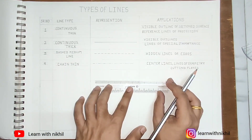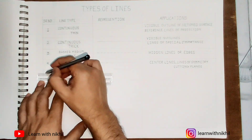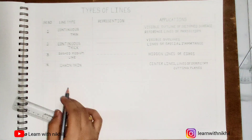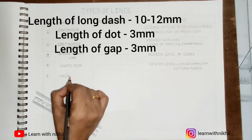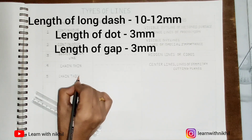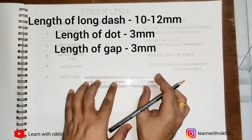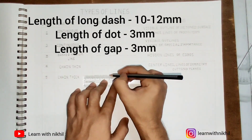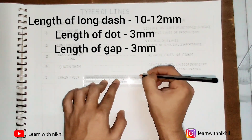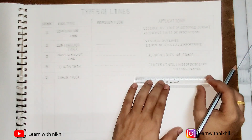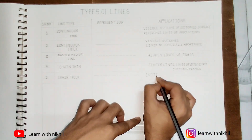The next one is the chain thick line. The distance matters a lot here as well — it is essentially the bigger version. The long dash is 10 to 12 millimeters, the gap is 3 millimeters, and the dot is 3 millimeters. It is used as a cutting plane line.